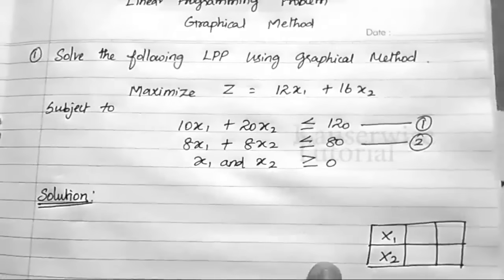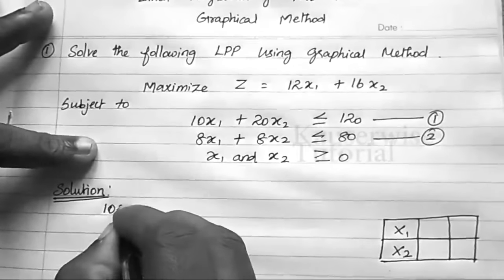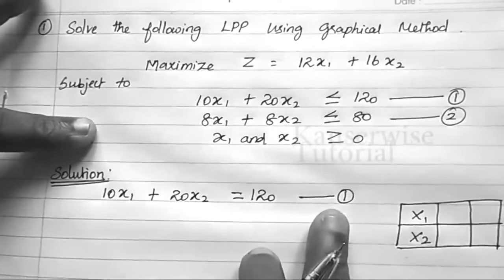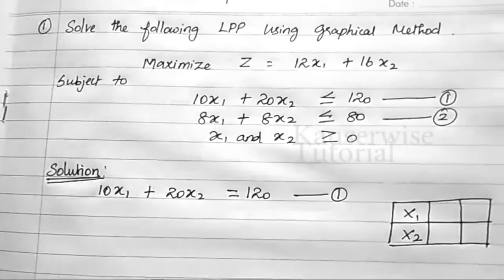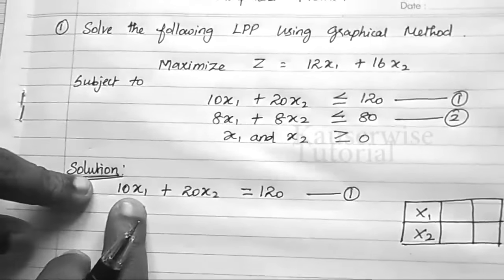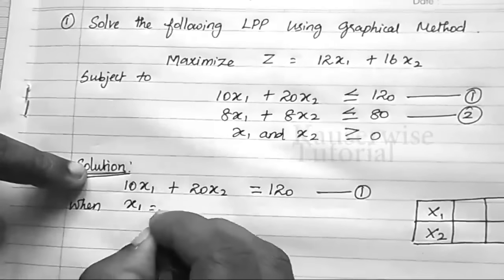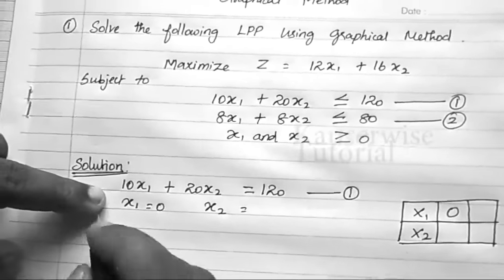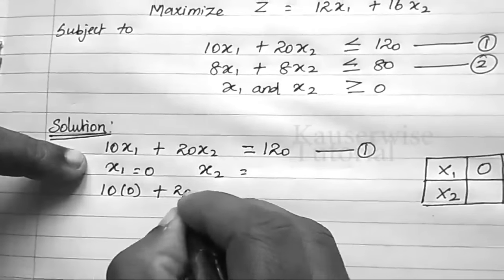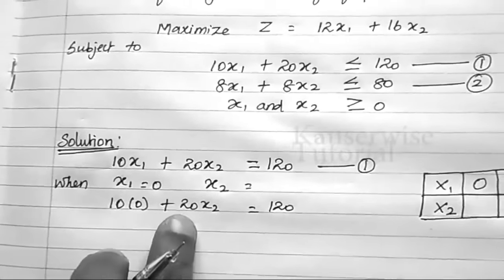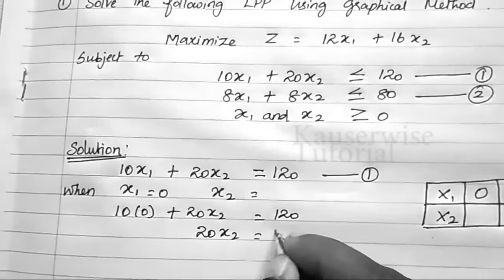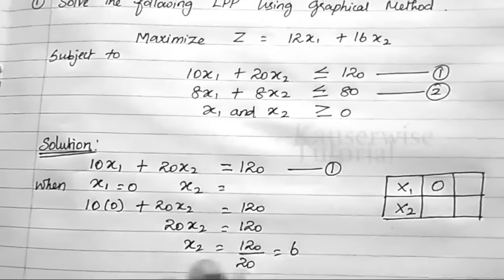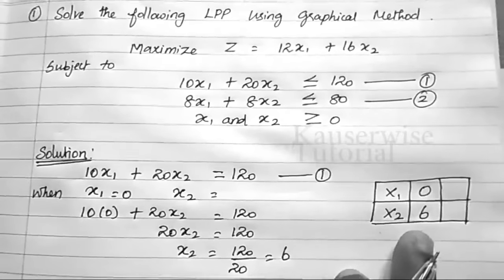The first step is to convert the first constraint into an equation: 10x1 plus 20x2 equals 120. We need two points to plot on the graph. When x1 equals 0, substituting gives 20x2 equals 120, so x2 equals 6. When x2 equals 0, substituting gives 10x1 equals 120, so x1 equals 12. So we have two points: (0, 6) and (12, 0).